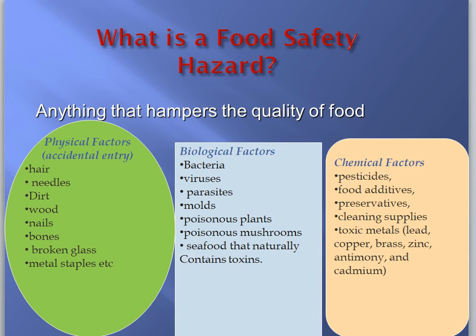Those are the different types of hazards we come across: physical hazards, biological hazards, and chemical hazards. In addition, there could be other factors - for example, towels in the kitchen could also come under physical hazards. Each and every industry could have different hazards, but we can divide them into these three types: physical hazards, biological factors, and chemical factors. We will continue in the next session.